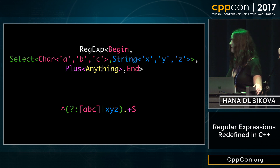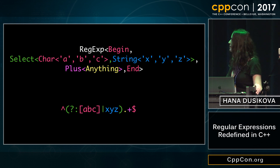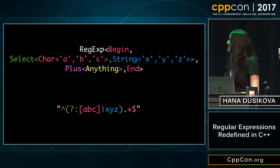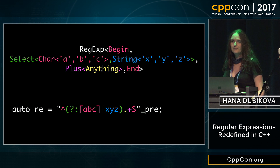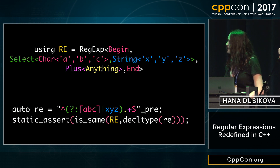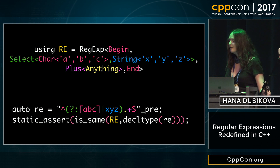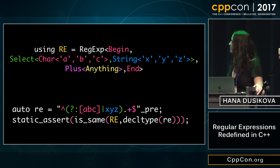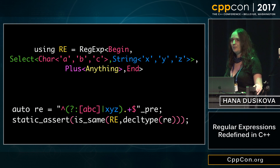There is a proposal — I don't know the actual state, but it's implemented in Clang and GCC — which allows you to do this, or respectively this. And actually, it's this. I wrote an LL(1) parser which transforms this string into exactly the same type.